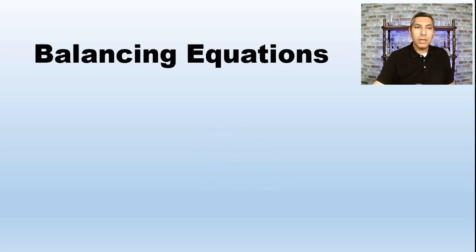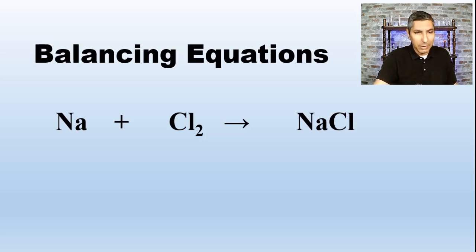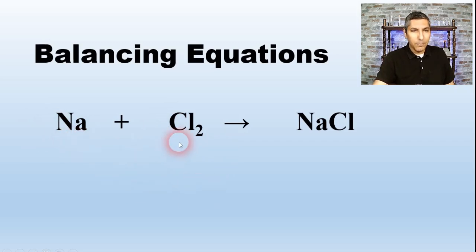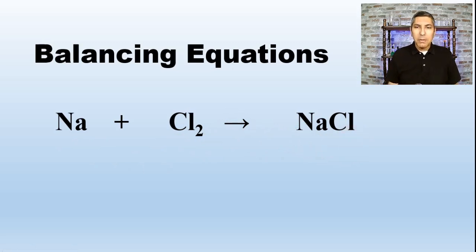Now, back to the video. When we take a look at a typical chemical equation — in fact, this is one that maybe we've written before already — you might notice that in this synthesis reaction, we have two reactants: sodium and chlorine that are reacting to form sodium chloride. This looks like a very fine chemical reaction, one that we can carry out in the lab fairly simply. But there's a problem with the way we have this equation written.